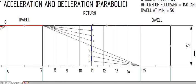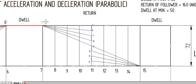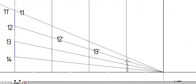Mark the intersection points as dash points: 7 dash is the top point itself, 8 dash is the meeting point of inclined line and vertical, then 9 dash, 10 dash, 11 dash is the same diagonal point, 12 dash, 13 dash, and last is 14 dash.